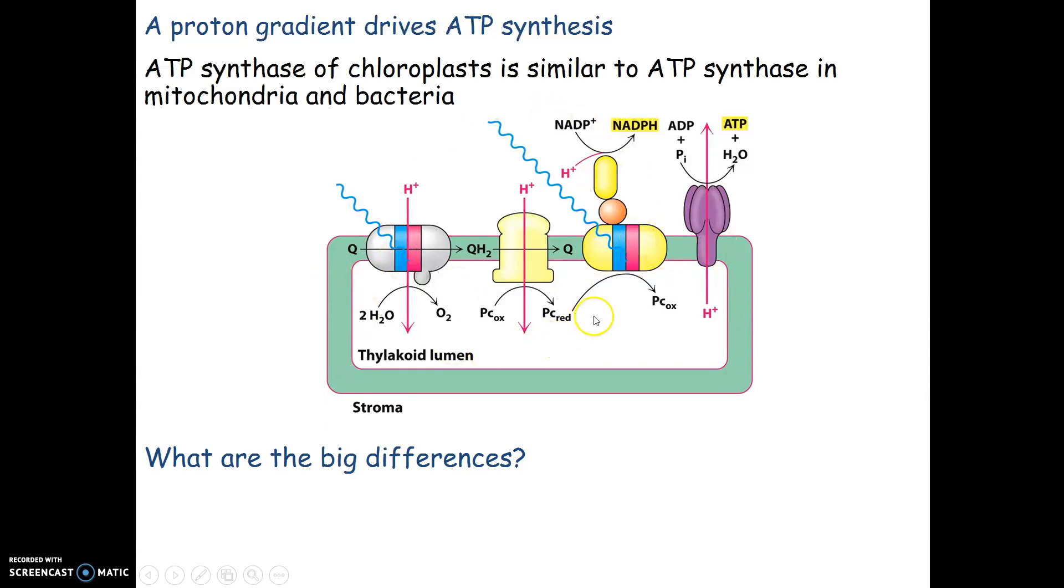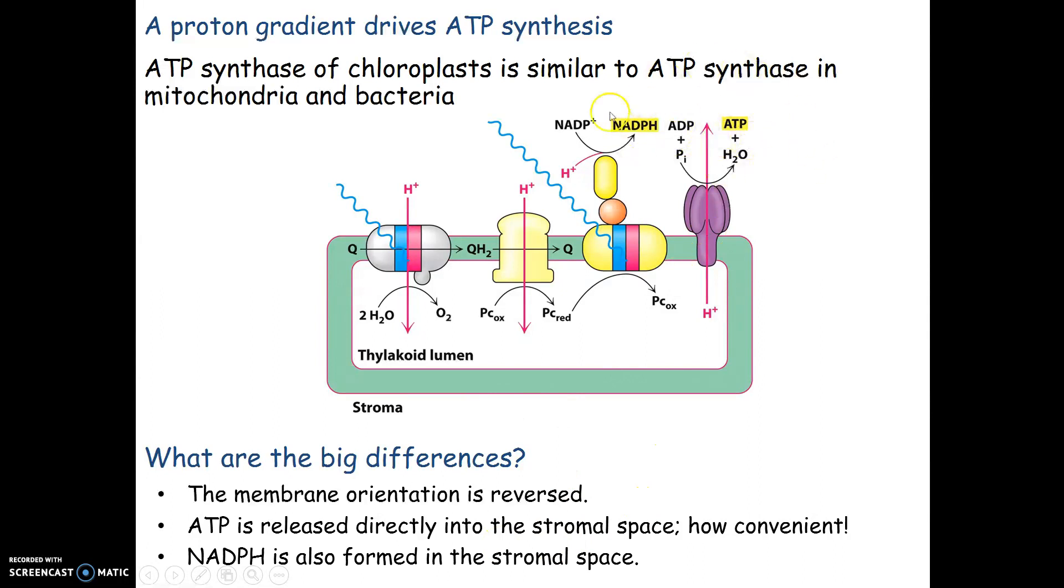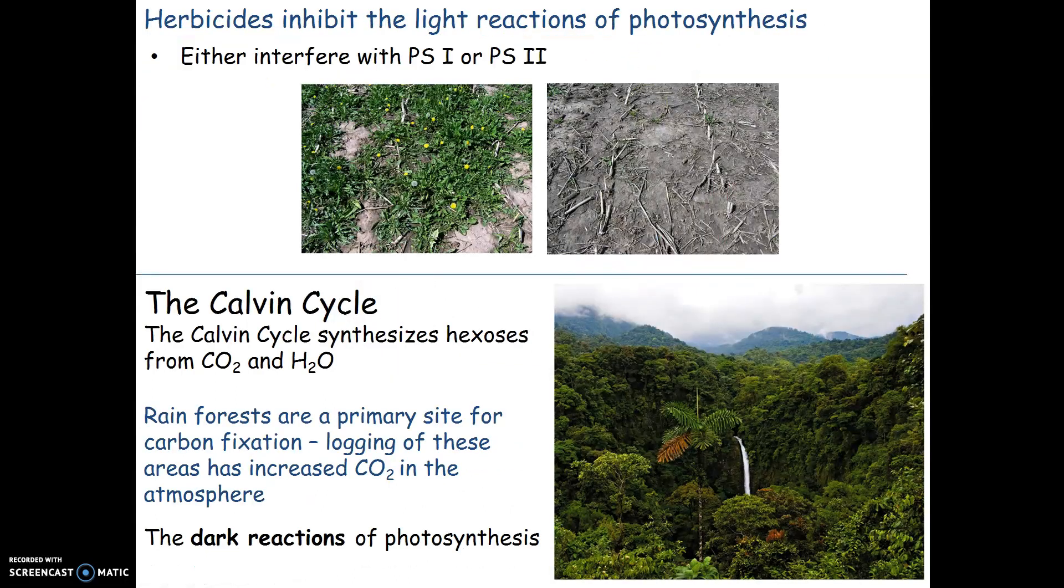Looking at chemiosmotic coupling between the Z-scheme and ATP synthase, it works similarly to ATP synthase in mitochondria and bacteria. However, the membrane orientation is reversed. Instead of going into the matrix like in cellular respiration, the ATP is formed out in the stroma space, where all anabolic processes occur. This is also where NADPH is used for the Calvin cycle.